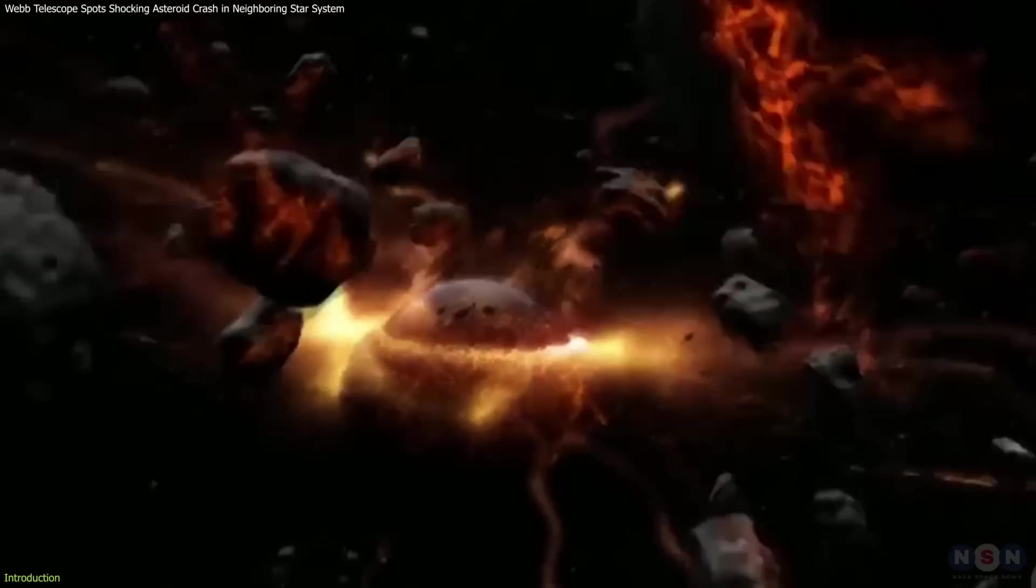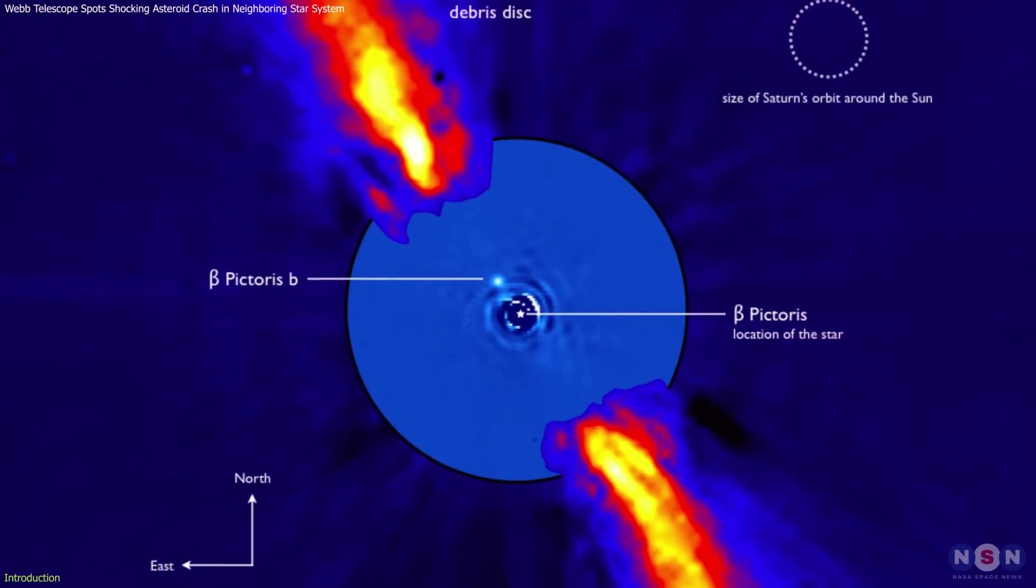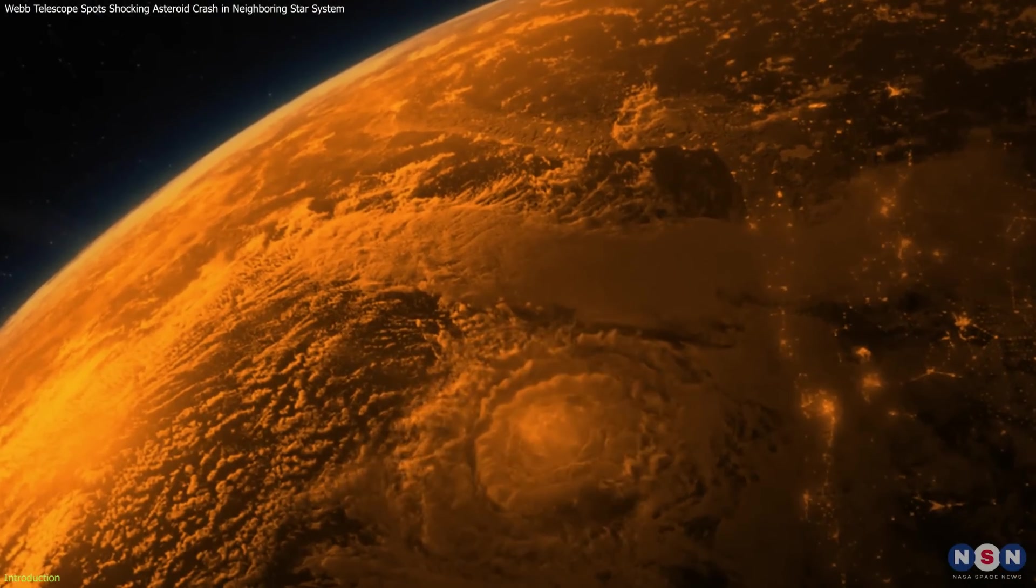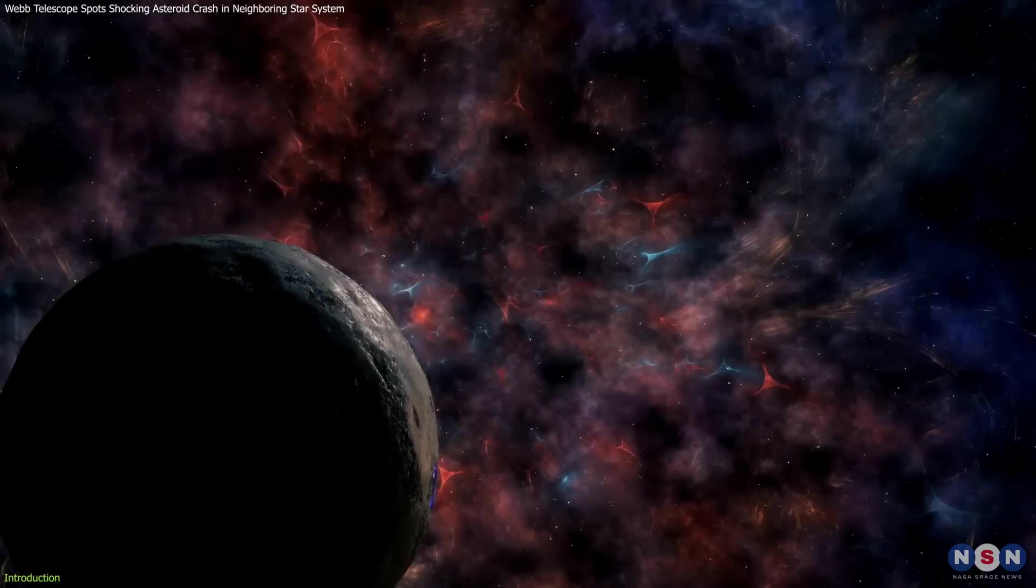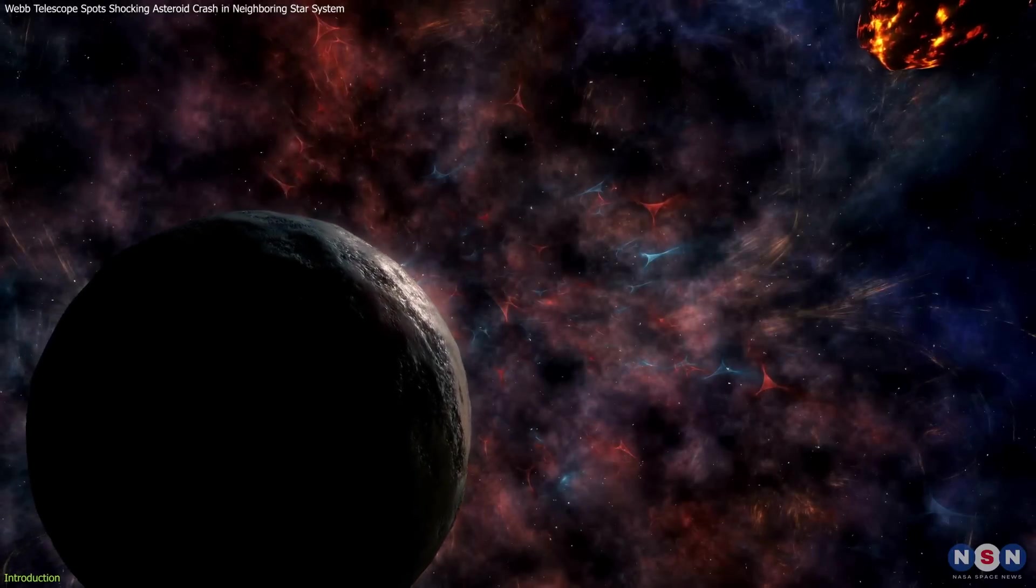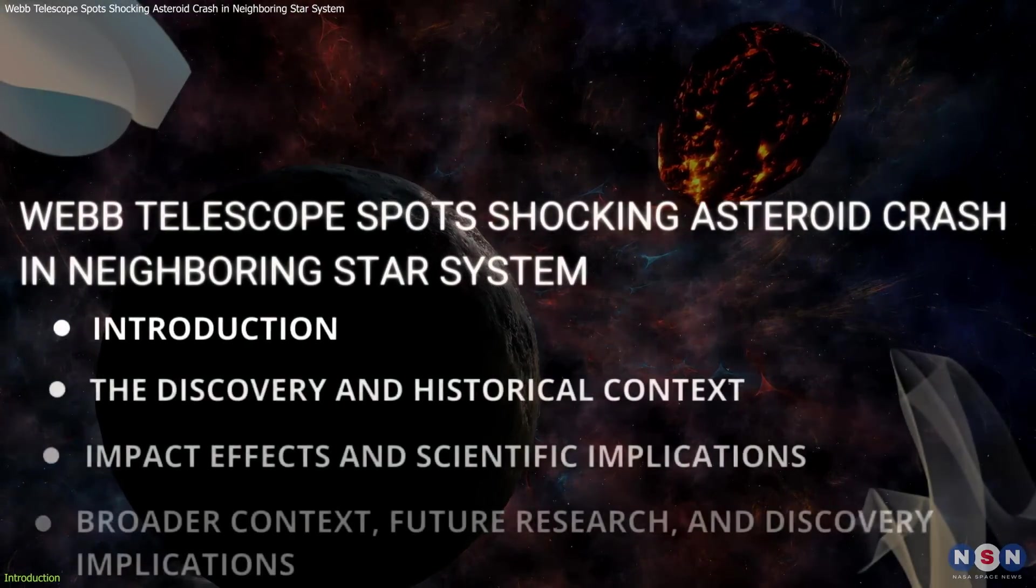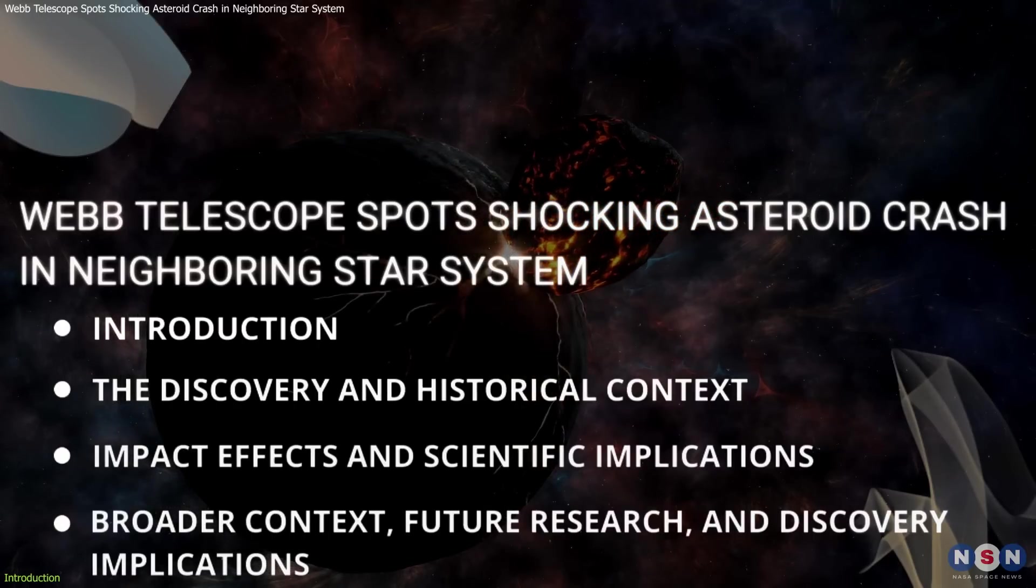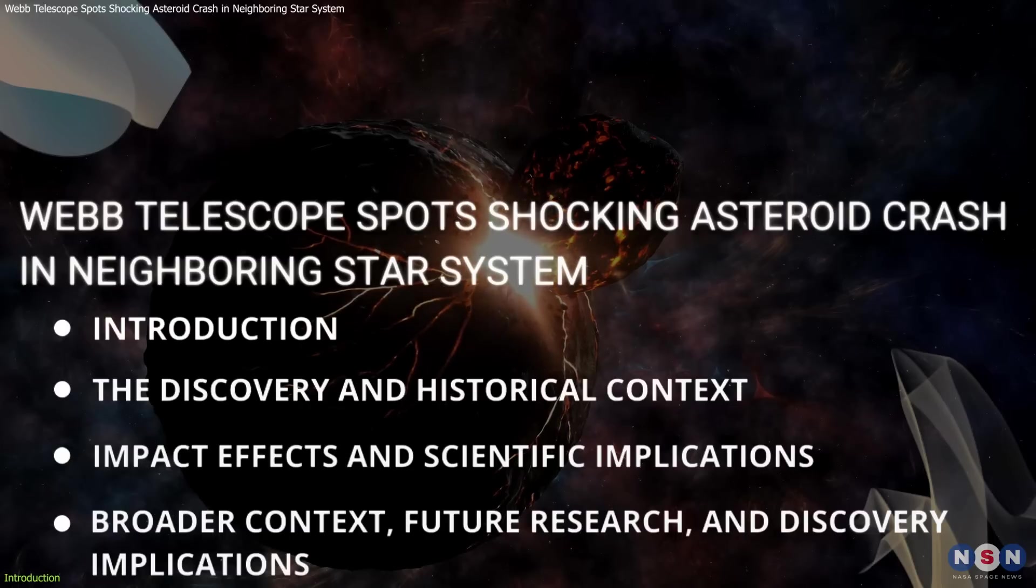Astronomers have recently observed what appears to be a massive asteroid collision in the Beta Pictoris star system. The collision reveals crucial insights into planetary formation and the early dynamics of star systems, offering a unique opportunity to study these phenomena in real time. In this video, we will explore the details of this remarkable collision, the scientific implications, and what it means for the future of astronomy and planetary science.